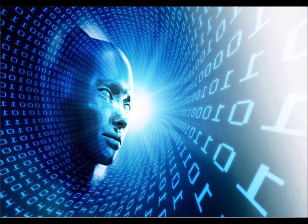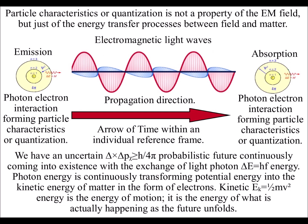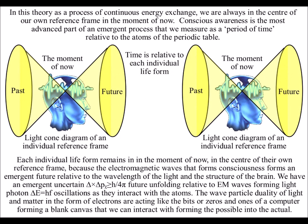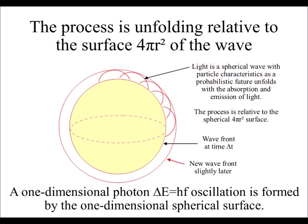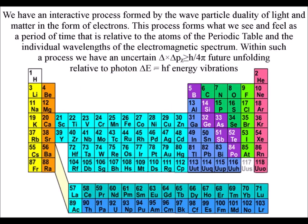In this theory the potential for this is formed by light and matter in the form of electrons having wave-particle duality. Light is an electromagnetic wave over a period of time with particle characteristics or photons as an uncertain probabilistic future unfolds relative to the atoms of the periodic table.